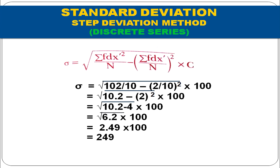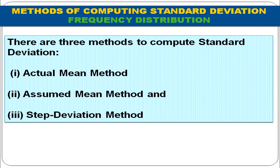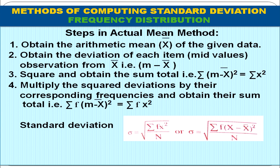Now we calculate standard deviation in case of frequency distribution. Again there are three methods: actual mean method, assumed mean method, and step deviation method. An important additional step here is that class intervals must first be converted to mid values. The formula remains the same as for discrete series, but steps change slightly.